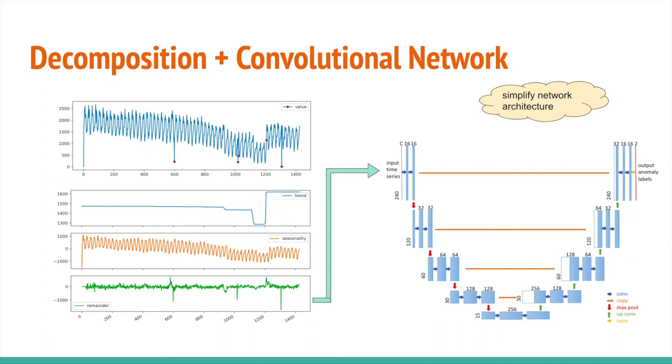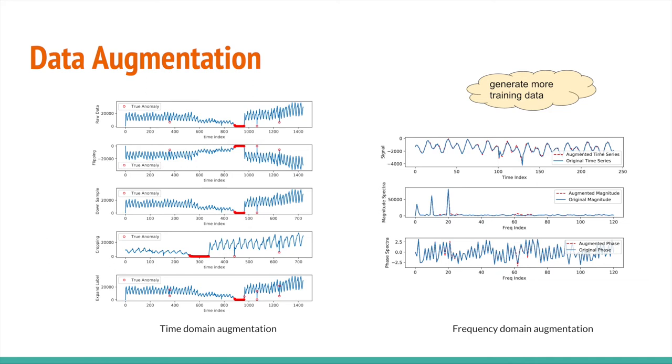However, applying U-net directly to the remainder won't work well, because it's very hard to train a neural network, especially for time-series anomaly detection problems where we have very few samples. Hence, we need to use data augmentation to generate more training samples.